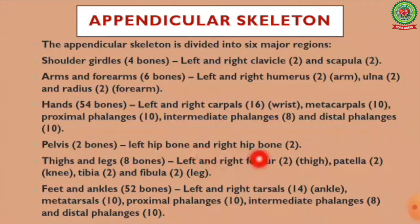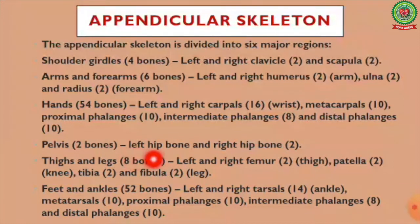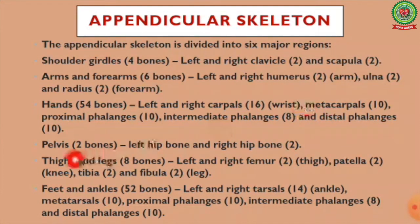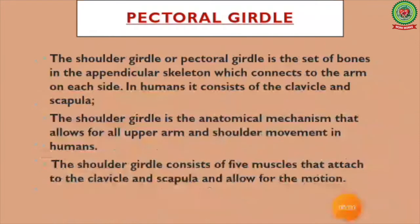Fourth, the pelvis or pelvic girdle: left hip bone and right hip bone. Fifth, thighs and legs, consisting of left and right femur, patella bone, tibia, and fibula. Sixth, feet and ankle: left and right tarsals, metatarsals, proximal phalanges, intermediate phalanges, and distal phalanges.